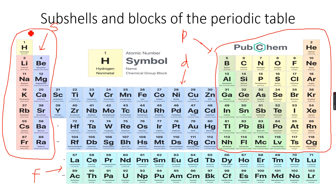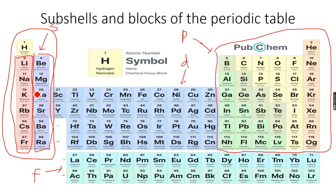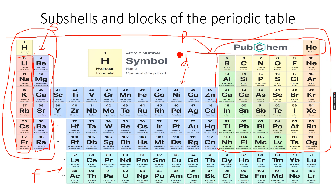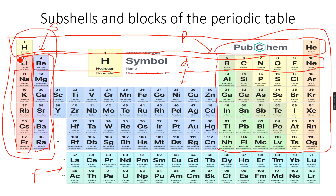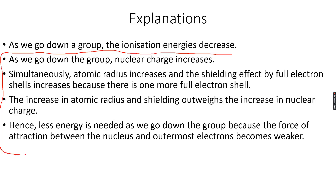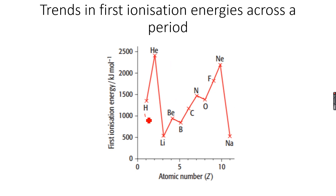The vertical columns are called groups. If we ignore hydrogen, these are the groups. Periods are the horizontal rows — this is the first period, and this is the second period of the periodic table. The first period has only hydrogen and helium; the second period goes from lithium to neon. So now let's look at what is happening across a period. The general trend that we see is that when we go across a period...